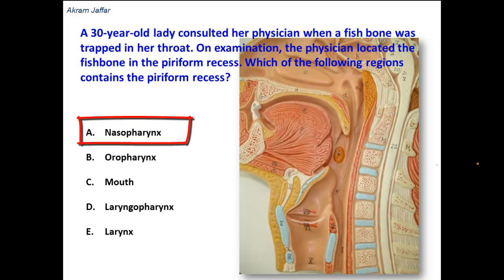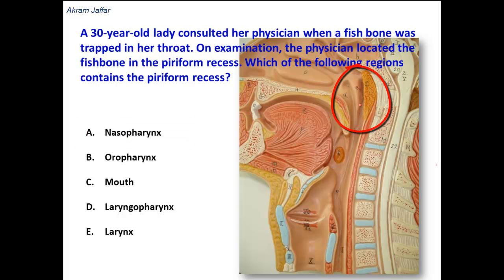Option: Nasopharynx. This is the region of the nasopharynx. It contains a recess — it has a lateral recess in the nasopharynx — but this is not the pyriform recess. So this option is wrong.